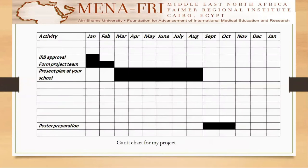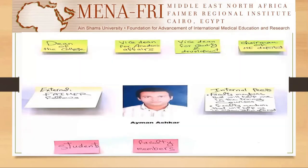My Gantt chart for my project is to obtain the IRB approval in January 2020, then form the project team in January and February, then present the plan at my medical school from March through August 2020, then to be ready for poster presentation in September and October 2020.